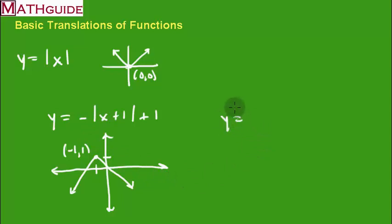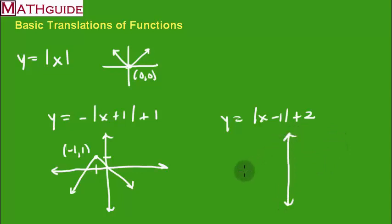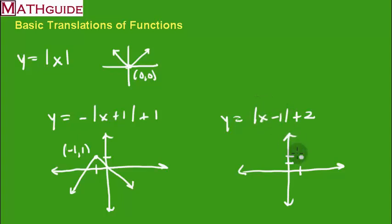Let's try another: the absolute value of (x minus 1) plus 2. There are no negatives, so it's still a v-shape. We move it one unit to the right and two units up. Notice that inside the absolute value you do the opposite — instead of moving one left, you move it right. So the vertex of my v-shape is now at (1, 2).